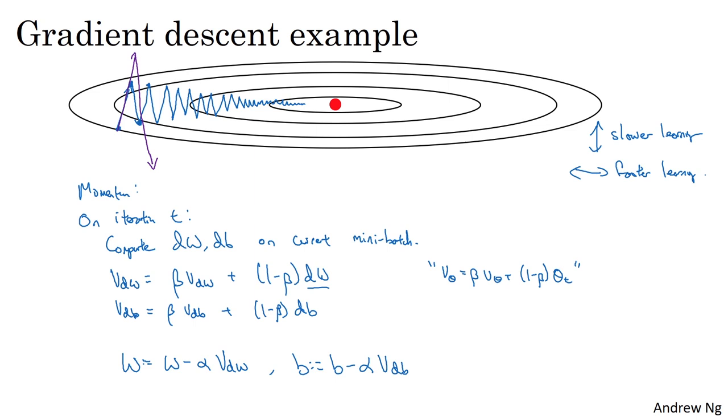So what this does is smooth out the steps of gradient descent. For example, let's say the last few derivatives you computed were this, this, this, this, this. If you average out these gradients, you find that the oscillations in the vertical direction will tend to average out to something closer to zero. So in the vertical direction where you want to slow things down, this will average out positive and negative numbers, so the average would be closer to zero.